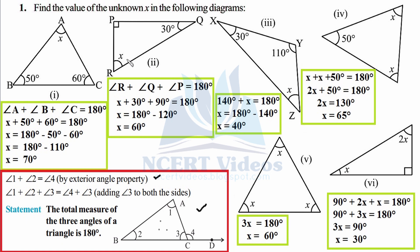In the second part, angle R is unknown. The square box represents 90 degrees. So x plus 30 plus 90 equals 180 degrees. X equals 180 minus the sum of 90 and 30, which is 120. Therefore x equals 60 degrees.